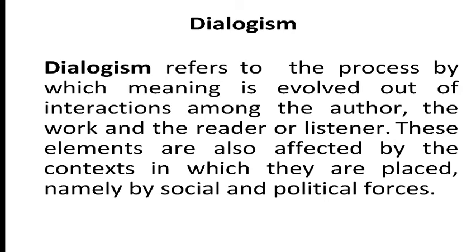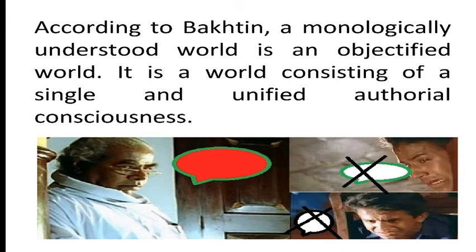Bakhtin compares the dialogic novels of Dostoevsky with that of Tolstoy's. He feels Tolstoy's characters are restricted by the strong presence of the author's voice. If all of the characters are voicing the thoughts of the author, then it is called a monologic novel, having a single voice. According to Bakhtin, a monologically understood world is an objectified world consisting of a single and unified authorial consciousness.